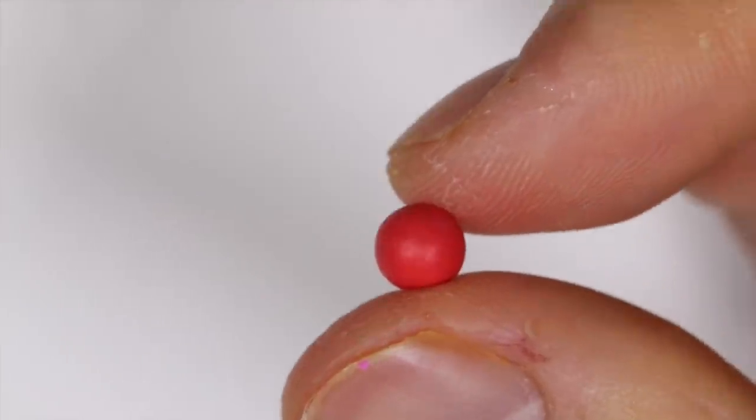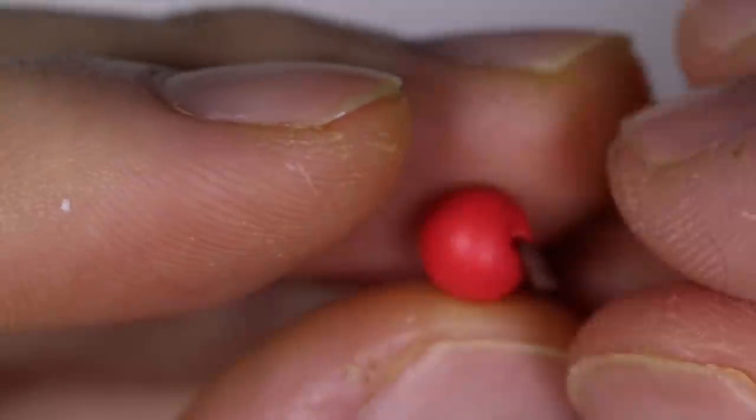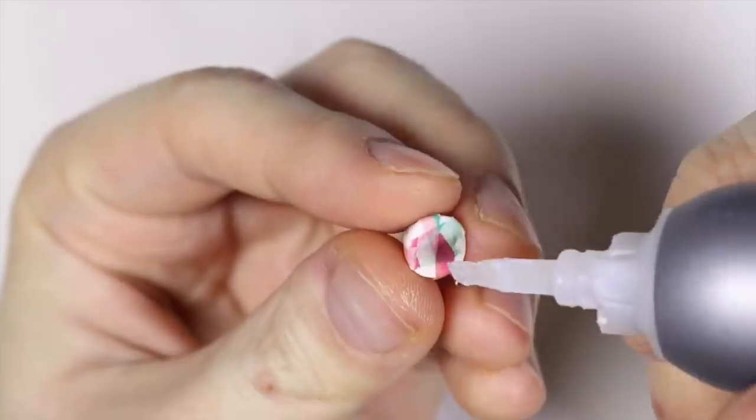Next I really wanted to make a cherry on top so I got a ball of red clay. And then I rolled a snake of brown clay and I cut a little segment out. And then using a dotting tool I made a little indent in the middle of my cherry and I added the little brown stock to it.